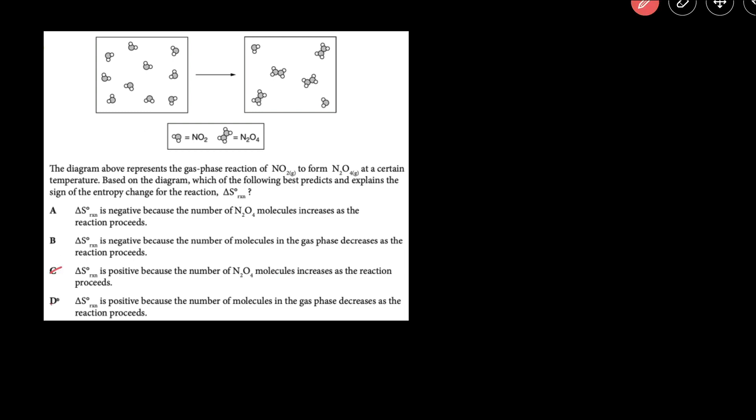So we can get rid of C and D because we expect delta S to be negative just because the number of gas molecules are decreasing, and that's consistent with answer B.